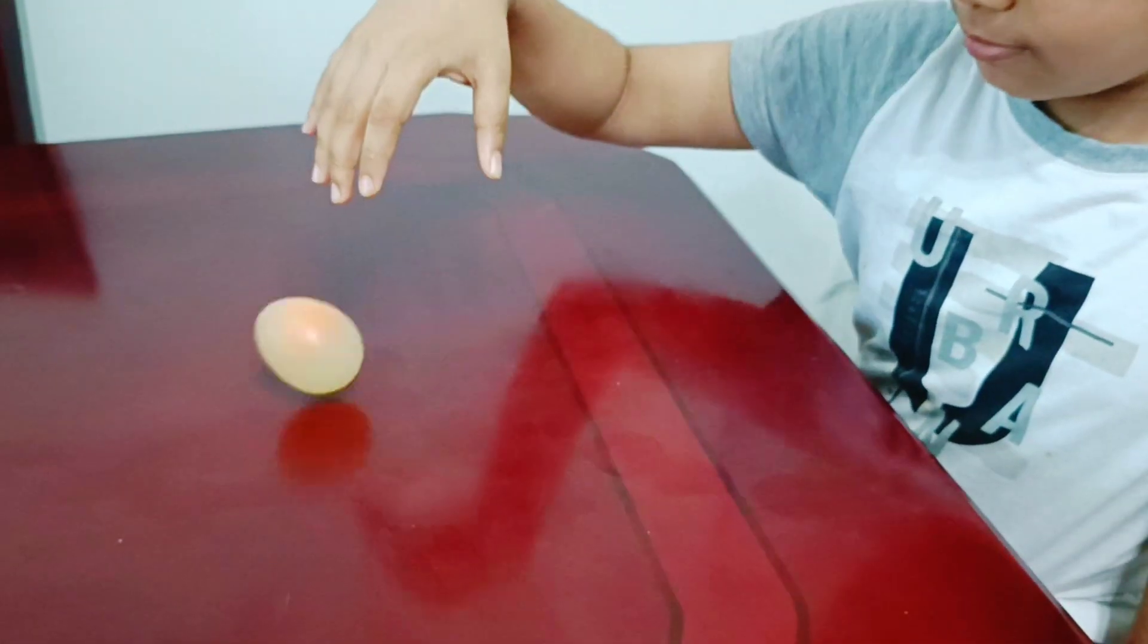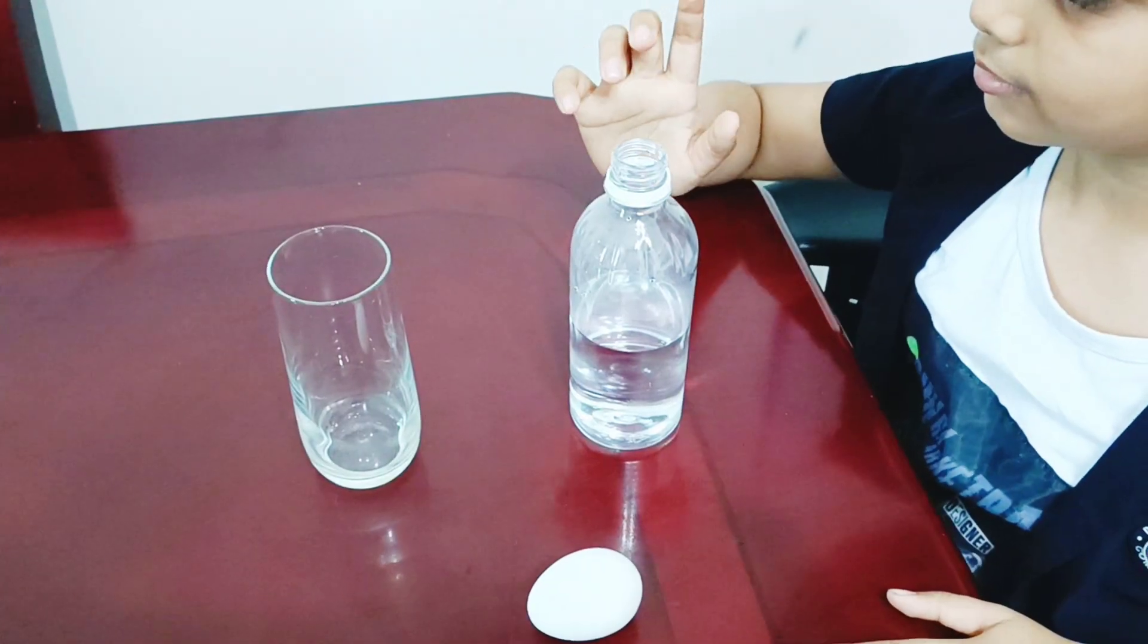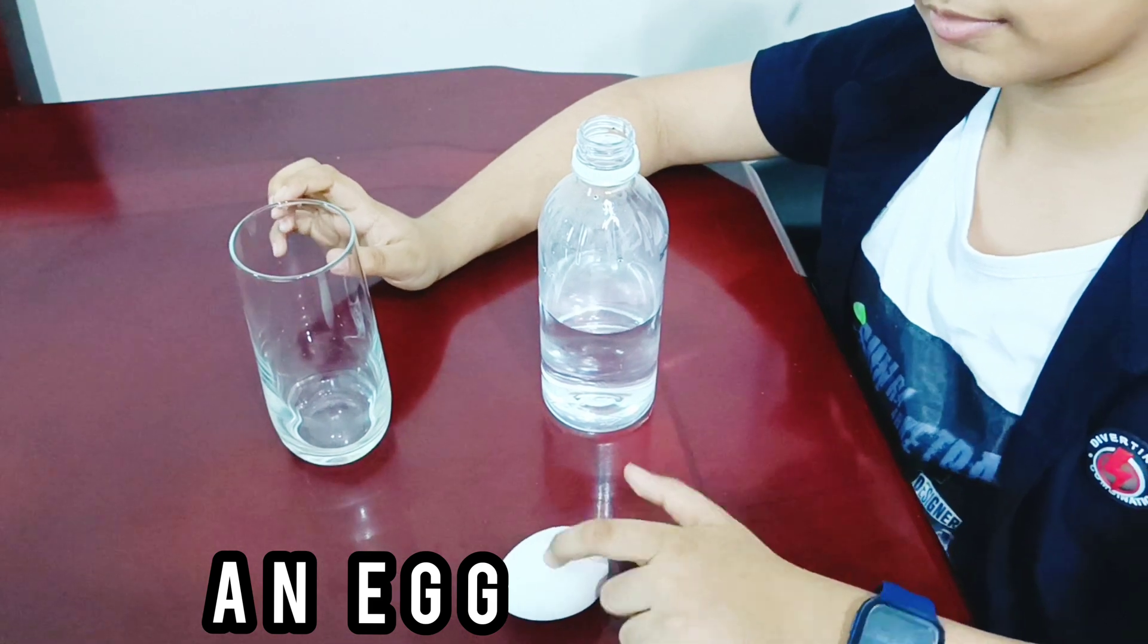In today's video, I will be explaining you how to make this egg. So first, you will need a bottle of vinegar, a glass and an egg.